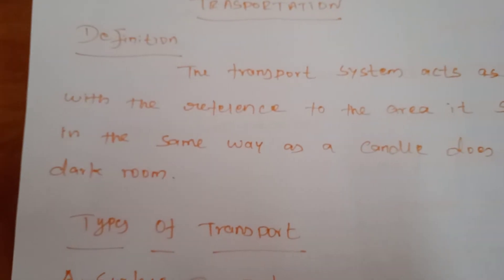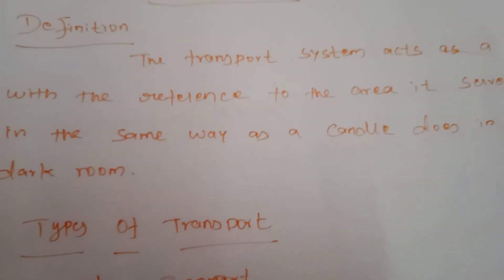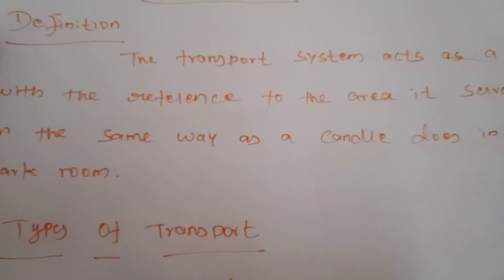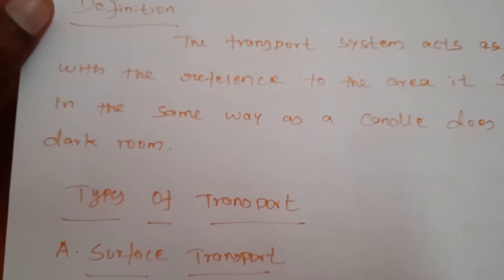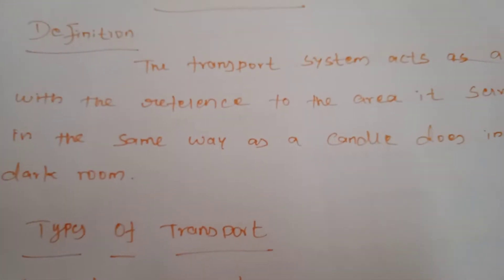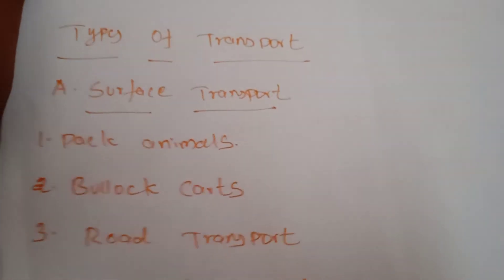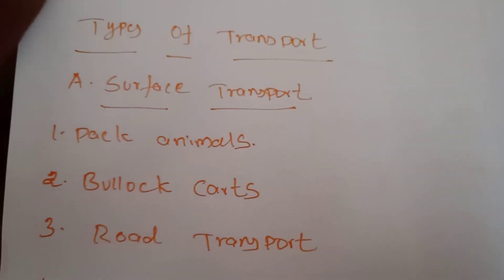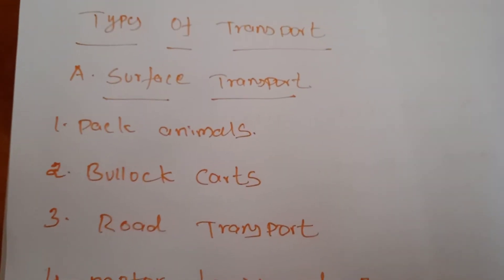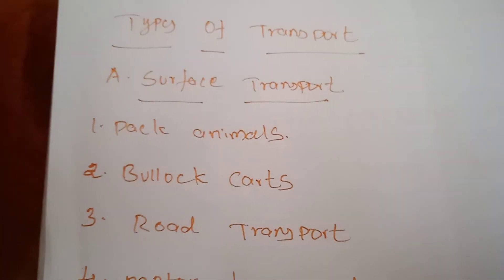Goods have no use unless they are made available at the place where and when they are wanted. Transport is an integral part of commerce — it is a means to carry men and materials from one place to another for the purpose of consuming commodities. Moving to the types of transport: commodities and people move from one place to another using different types of transport. The first is surface transport, also called land transport.